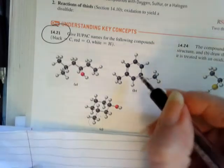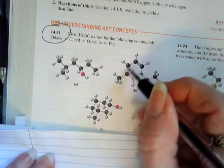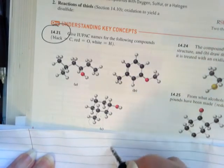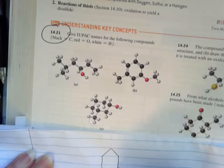Number 21B, I'm going to redraw this. This is a benzene ring right here. So I'm just going to start with that.